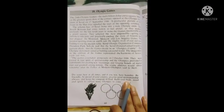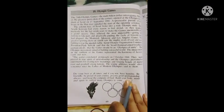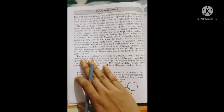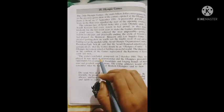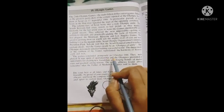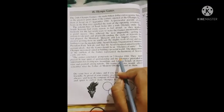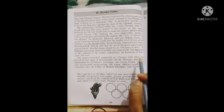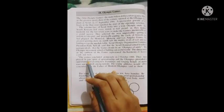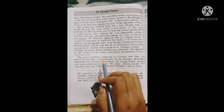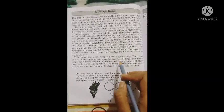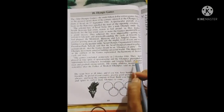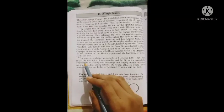Good morning students. Today we will continue this chapter, so let us start. The games concluded pompously on 2nd October 1988. They were played in true spirit of sportsmanship and the Olympics provided an opportunity for creating new friendships and forging bonds of mutual trust and goodwill among nations.